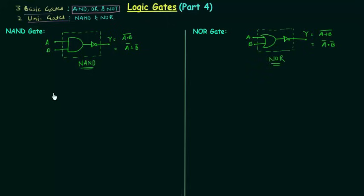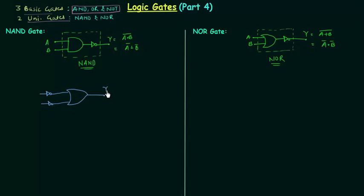There is one more way to obtain NAND gate, and in this we will use OR gate and NOT gates — we are not going to use AND gate but we will use OR gate. We will first complement the 2 inputs using 2 NOT gates. So we have A complement and B complement going into the OR gate, and the output Y is equal to A complement OR B complement. You can see we have the same result as when we used AND gate and inverter.